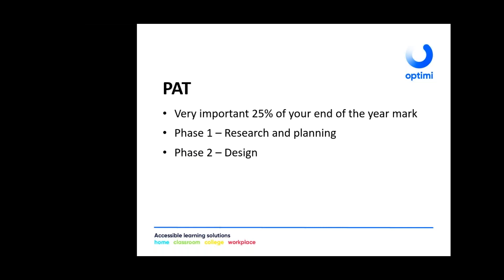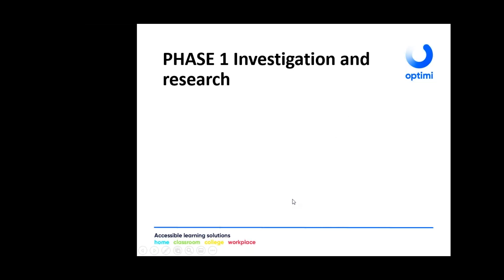The PAT basically has three phases. The first phase is research and planning. The second is design. The third phase is your program. In phase one, we're not really looking at the program yet — we are doing investigation and research. We are going to look at what is out there in real life and see if we can write a program that is similar or has the same characteristics as existing programs.